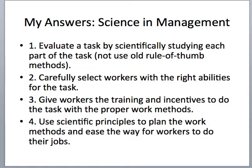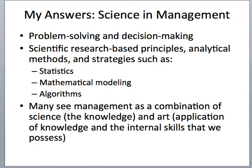You can't discuss scientific management without talking about the Gilbreths. There are four steps that Frederick Taylor and the Gilbreths utilized to make up what we call scientific management to this day — also covered in my Chapter 2 lecture video. Those four steps are: evaluating the task by scientifically studying each part; carefully selecting workers with the right abilities for the task; giving them training and incentives to do the task with proper work methods; and using scientific principles to plan the work methods and ease the way for workers to do their jobs.